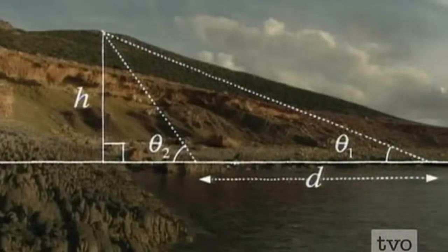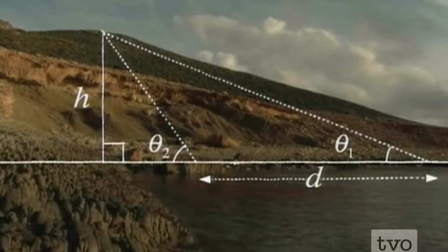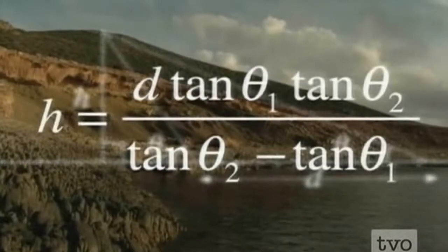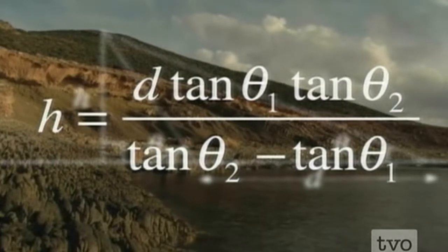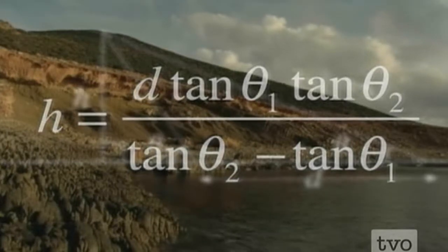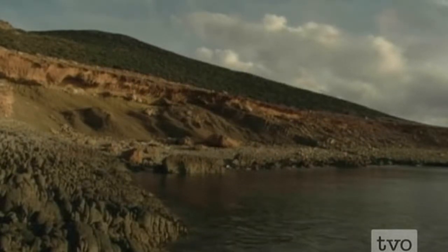Now I had enough information to calculate the height of the mountain. Using trigonometry and algebra, Al-Biruni used a formula that relates the height of the mountain to what are known as the tangents of the angles he measured. Using my measurements, I get a figure for this mountain of about 530 meters.